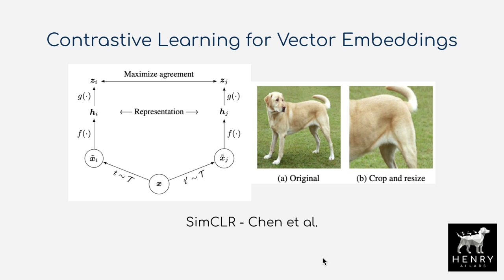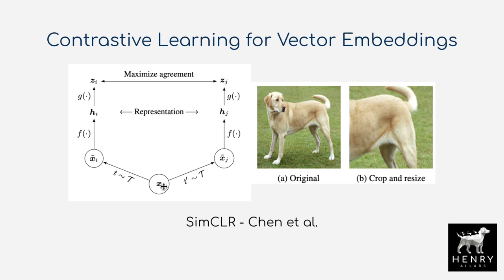Across different data domains, contrastive learning is the workhorse of learning vector embeddings. SimCLR is a famous example for images: you start with an original image, sample two data augmentations to form two semantically similar pairs, and maximize the alignment of the two vector representations. Dog images become more semantically similar to other dogs in the vector space, while pushing apart representations from negatively sampled images like cats, trucks, or airplanes.